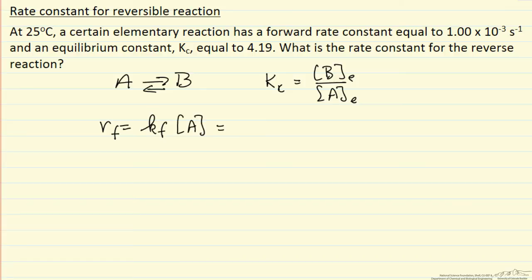The rate that B reacts to A, the reverse rate, is the rate constant for the reverse reaction times the concentration of B, which says the rate of forward over the rate of reverse is equal to, and now this is at equilibrium.